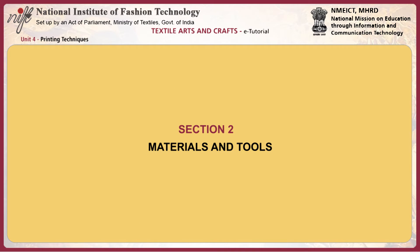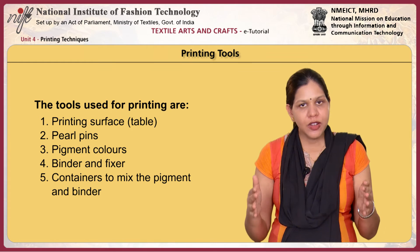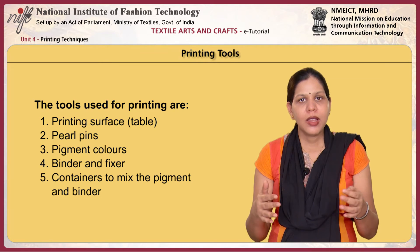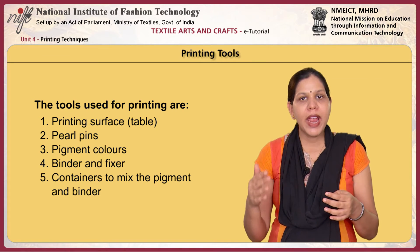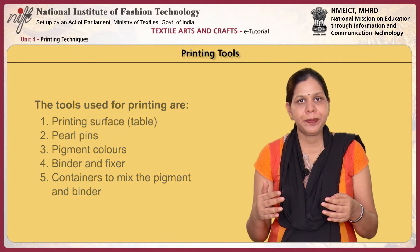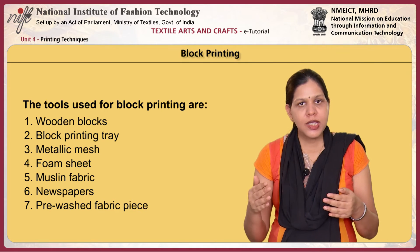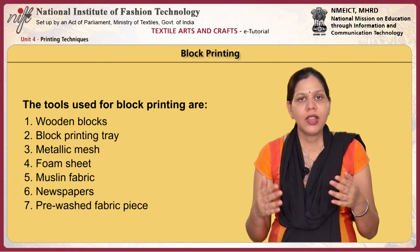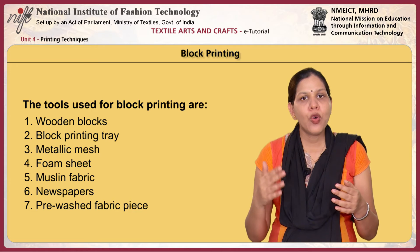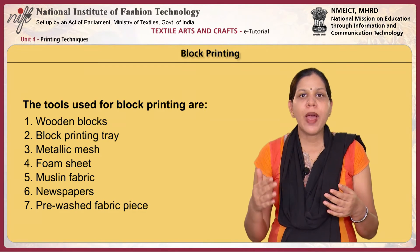In this section, you will learn about the materials and tools used to print fabrics. The tools used for printing are a printing surface such as a table, pearl pins, pigment colours, binder and fixer, and containers to mix the pigment and binder. The tools used for block printing are wooden blocks, block printing tray, metallic mesh, foam sheet, muslin fabric, newspapers and pre-washed fabric pieces.